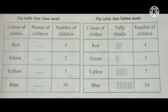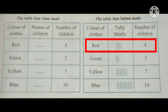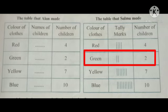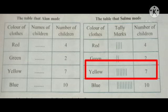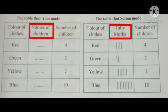Comparing the two tables: Alan shows 4 children wearing red, and Salma also shows 4. Two children wearing green in both. Yellow: 7 in both tables. Blue: 10 in both tables. Instead of writing children's names, Salma used lines which are called tally marks.